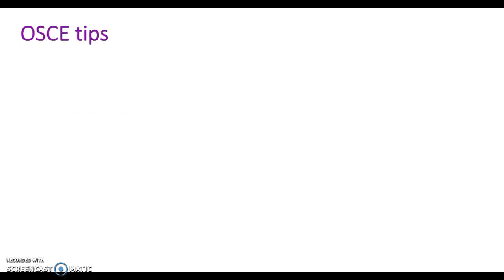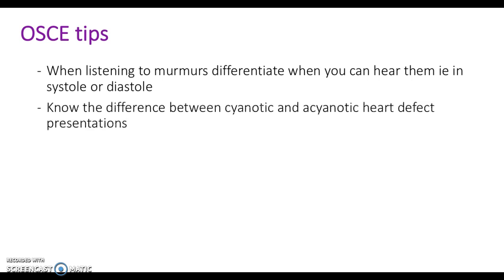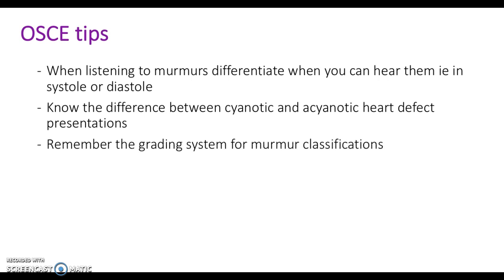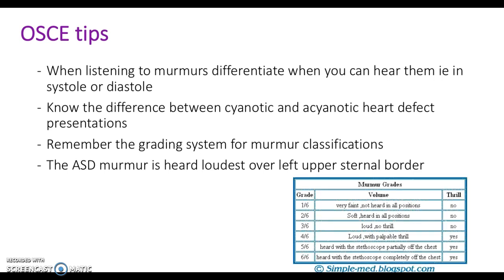What tips can we give you for the OSCE? When listening to murmurs, differentiate whether they're systolic or diastolic — this will really help you differentiate between the different types of heart defects. Know the difference between cyanotic and acyanotic heart defects. Remember the grading system for murmur classifications. The ASD murmur is heard loudest over the left upper sternal border.